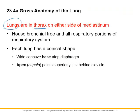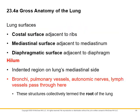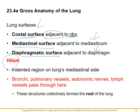The lungs are in the thoracic cavity, on either side of the mediastinum. Each lung has a base that sits on top of the diaphragm and an apex — the point at the top. Lung surfaces include the costal surface where the ribs sit, the mediastinal surface adjacent to the mediastinum, and the surface touching the diaphragm. The hilum is a region on the mediastinal side where the bronchi enter, along with pulmonary vessels, nerves, and lymphatics.